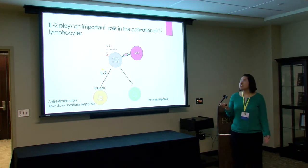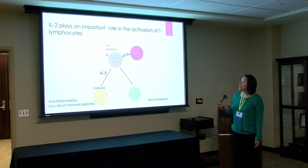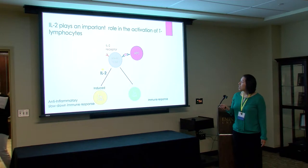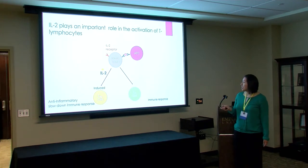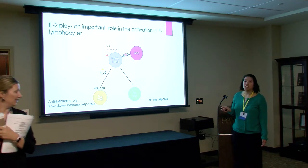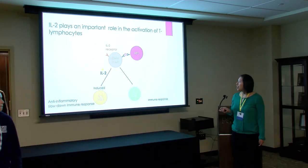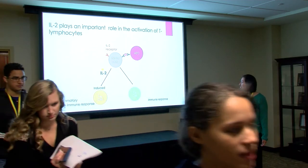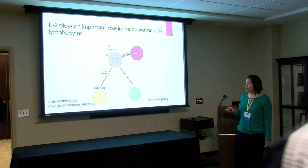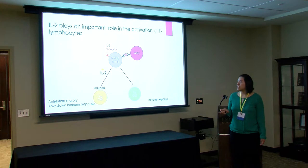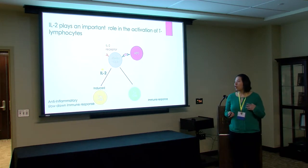The lymphocytes in the Peyer's patches start as naive cells. In the presence of bacterial antigen, they can either differentiate into a T effector cell or a T regulatory cell. If it differentiates into an effector cell, it elicits the immune response. If it differentiates into a regulatory cell, it will elicit the tolerance response, which could be anti-inflammatory or just slow down the immune response.